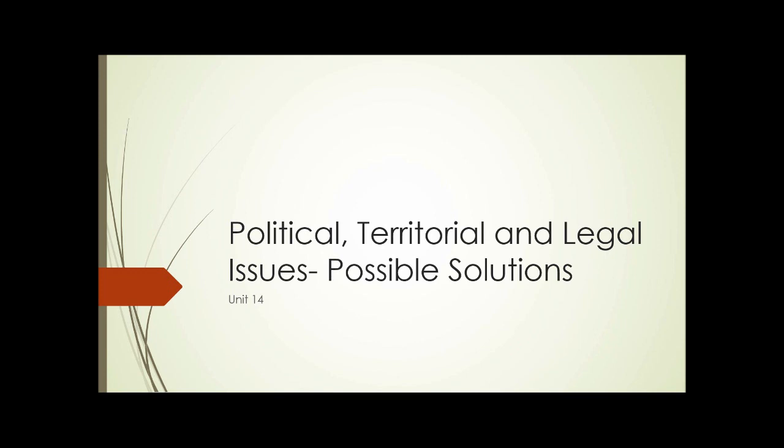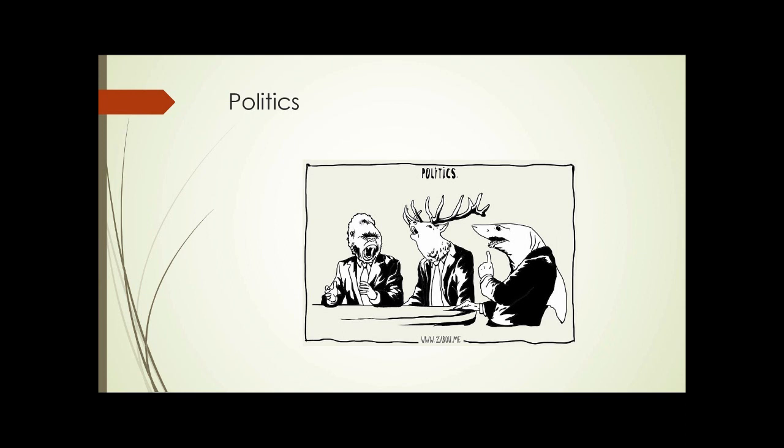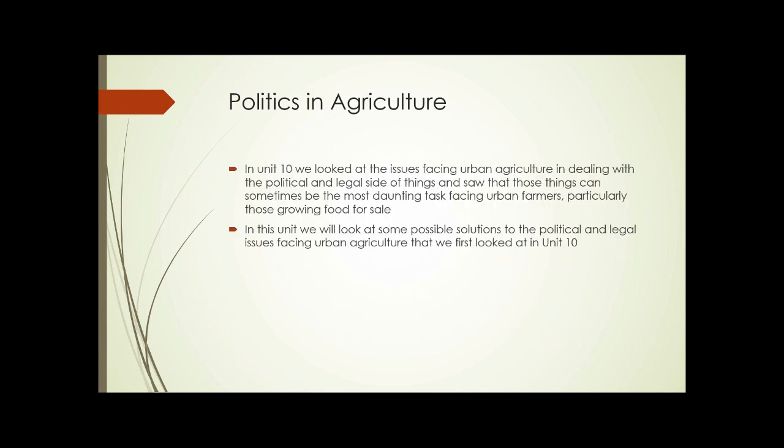Political, Territorial, and Legal Issues: Possible Solutions. Unit 14. Remember back in Unit 10 when we discussed political, legal, and territorial issues? We're going to take a look today at maybe some possible solutions to some of the issues that we run into there. Of all of the things facing urban farmers and those interested in urban agriculture in general, dealing with the political and legal side of things can sometimes be the most daunting task. That's especially true of anyone growing food for sale as opposed to having your own garden or being part of a community garden. In this unit, we'll look at some possible solutions to some of the issues that we first examined in Unit 10.